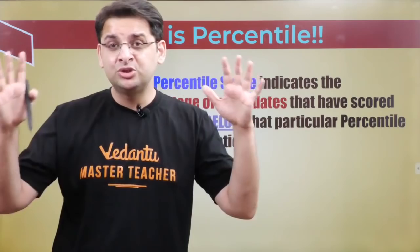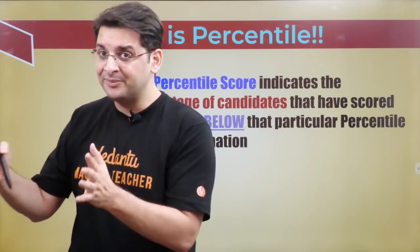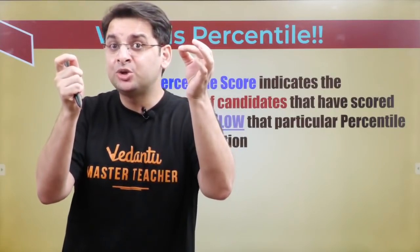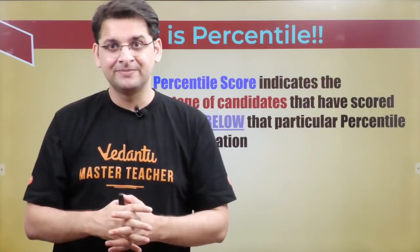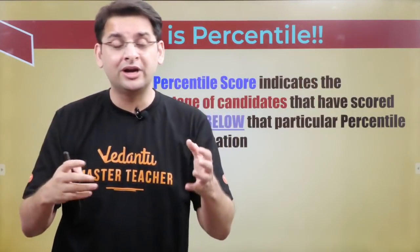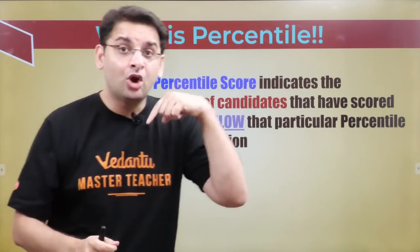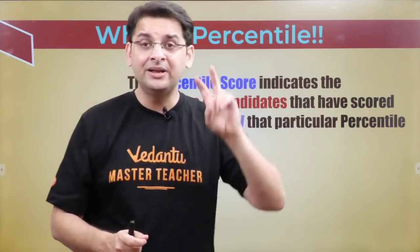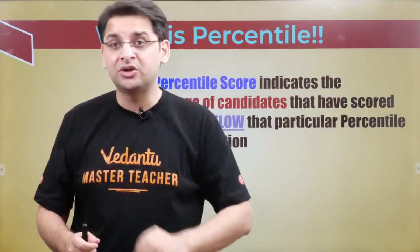Suppose I have appeared in an exam of 100 children including me, and if I have topped that examination, my percentile would be 100 — irrespective of how much I scored. So if I got 150 marks out of 300 but topped the exam, my percentile would be 100. The second child below me scored 147 out of 300.